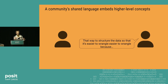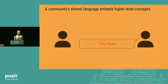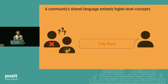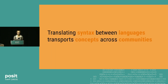For example, instead of manually describing a certain way to structure data, if we just say tidy data, we know what we mean — it elevates that concept, and we can springboard into whatever we're saying about it. But while these internal languages can really help communication within a community, sometimes they can make it harder to communicate with peers from other backgrounds, such as data science versus data engineering, or R versus Python.